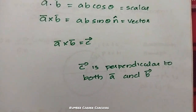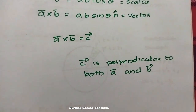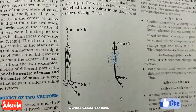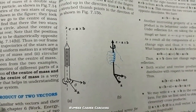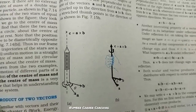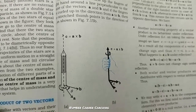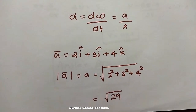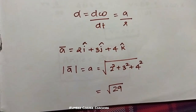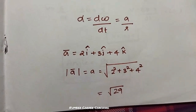So let's take the vector quantity. If you have vector A and vector B, and these two are perpendicular, then A cross B gives a vector product. For example, A vector is 2i cap plus 3j cap plus 4k cap. The magnitude of A vector is equal to root of 2 squared plus 3 squared plus 4 squared, that is equal to root 29.